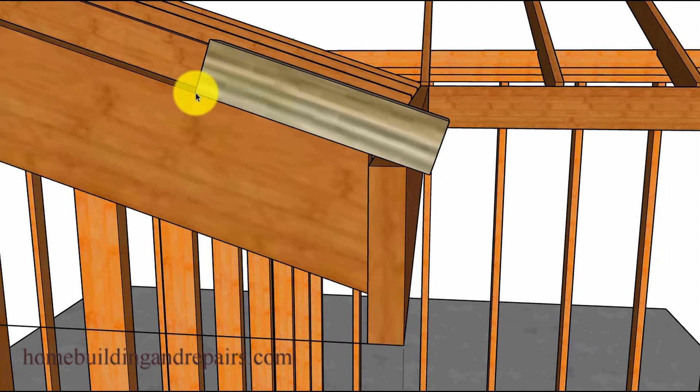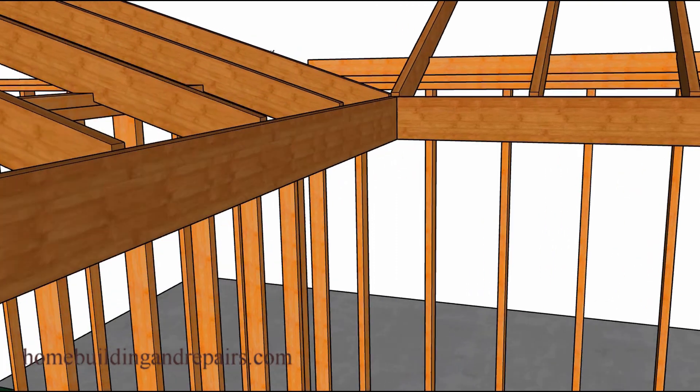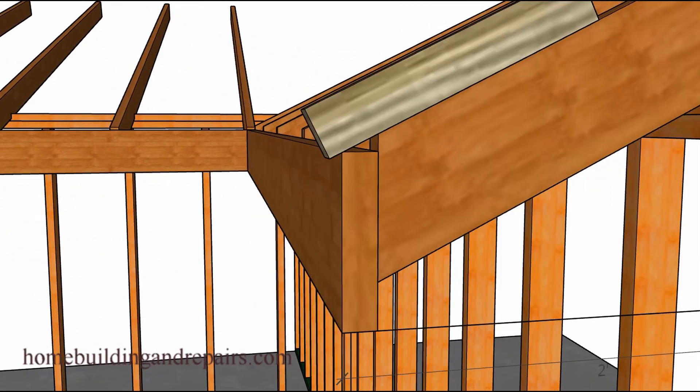And then we're going to be able to line up the fascia board where it needs to go for the roof sheathing to blend in perfectly on both sides.